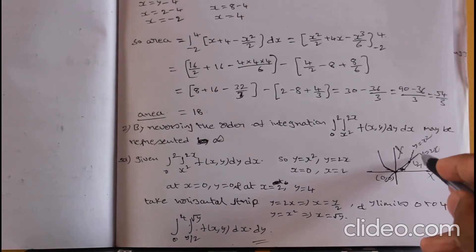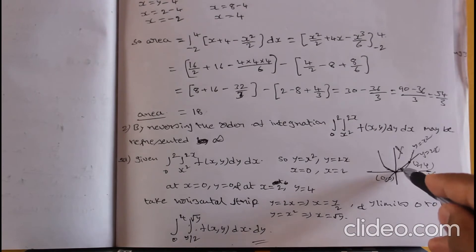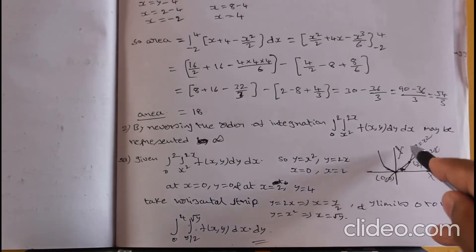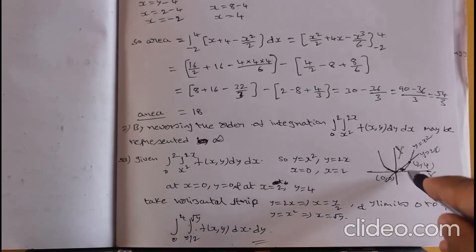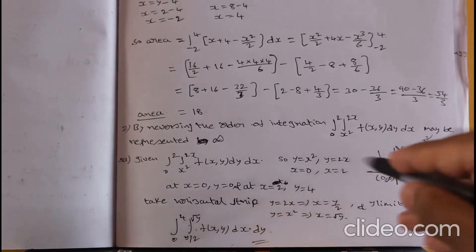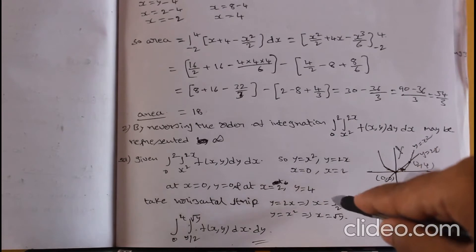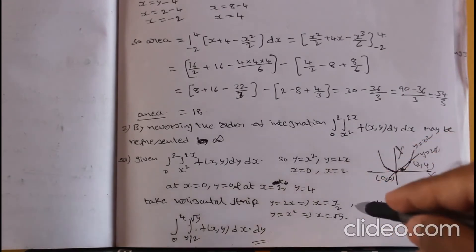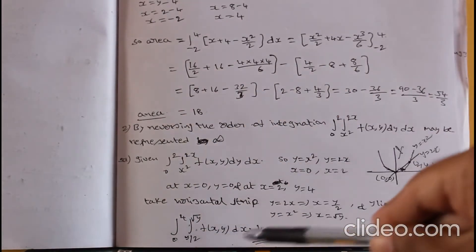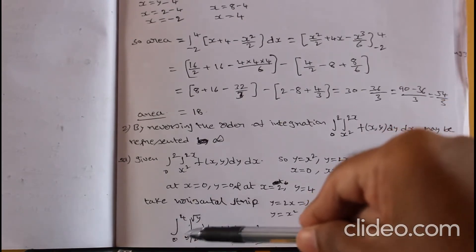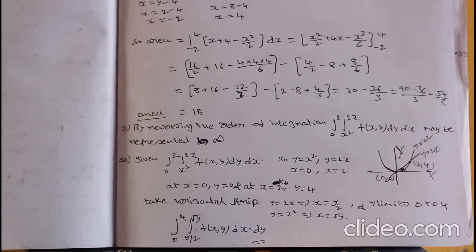Take the horizontal strip in this region. For this horizontal strip, the x limits are: from the line y = 2x → x = y/2, to the curve y = x² → x = √y. So x varies from y/2 to √y. For the horizontal strip, y is varying from 0 to 4.